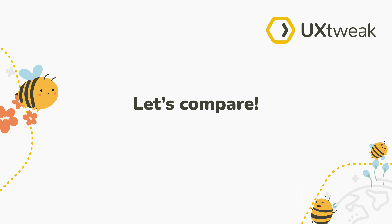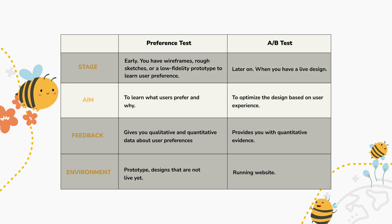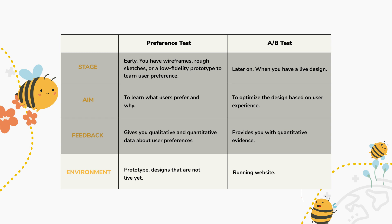Now that we've talked about preference testing and A-B testing, let's compare the two. For preference testing, you want to do this in the early stages of your design process — you'll use wireframes, rough sketches, or even a low fidelity prototype to learn user preference. A-B testing should be used later on in your design process when you have a live design. The aim of preference testing is to learn what your users prefer and why, while the goal for A-B testing is to optimize the design based on user experience. Preference testing gives you qualitative and quantitative data about user preferences, and A-B testing provides you with quantitative evidence. The best environment for preference testing is in your prototypes or designs that are not live yet, and the best place to run A-B tests is on an actual running website.